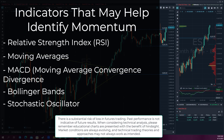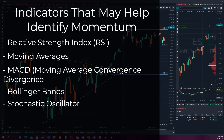Bollinger Bands are technical indicators that measure volatility and identify overbought or oversold conditions; traders often use Bollinger Bands to identify potential entry and exit points. The Stochastic Oscillator is a momentum indicator that compares an asset's closing price to its price range over a specified period of time; traders often look for bullish or bearish divergences on the Stochastic Oscillator to identify potential entry and exit points.